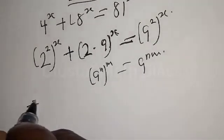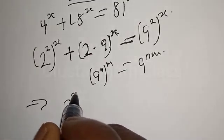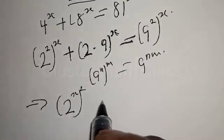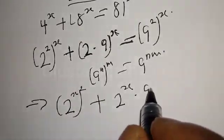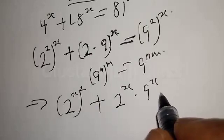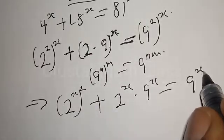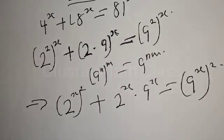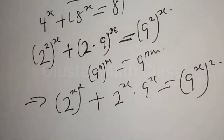This can be written as 2 raised to power 2x, plus 2 raised to power x multiplied by 9 raised to power x, plus 2 raised to power x is equal to 9 raised to power 2x. Now let's divide both sides by 2 raised to power 2x.